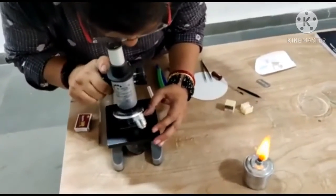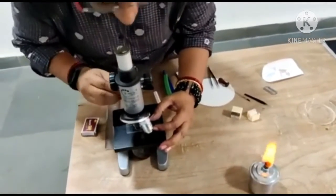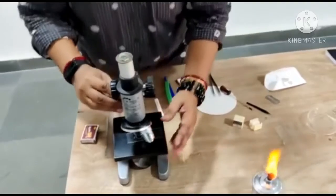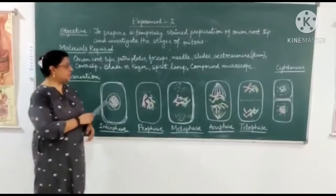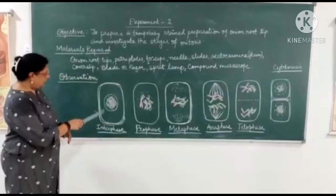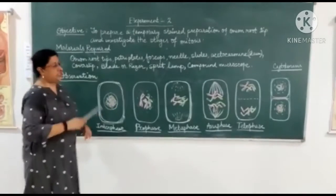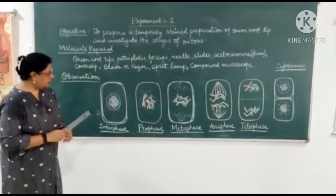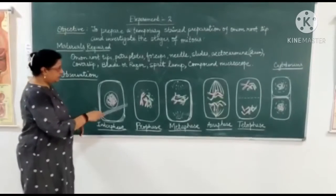First under low power, then under high power. This is the observation. In observation, we will see different stages of division in the onion root tip. These are the phases of division.